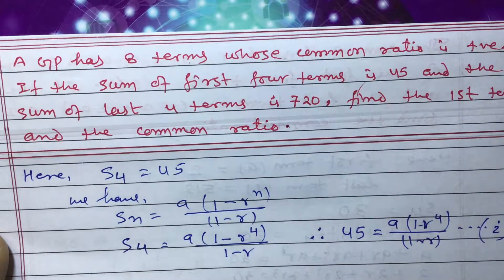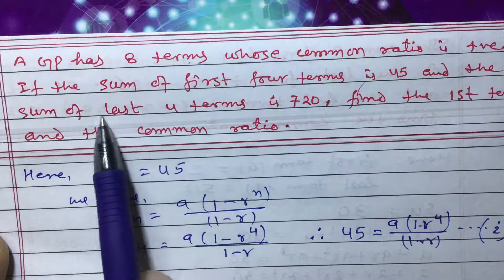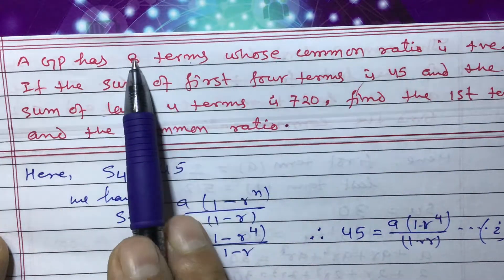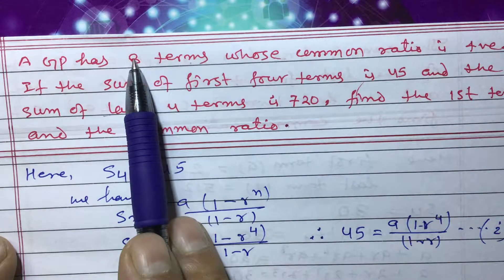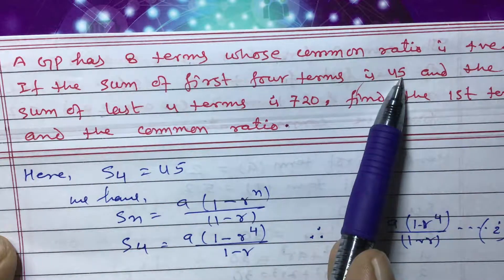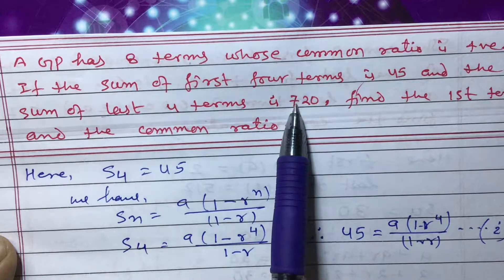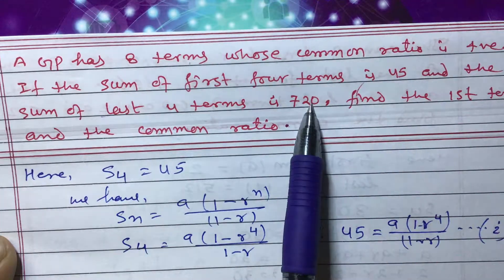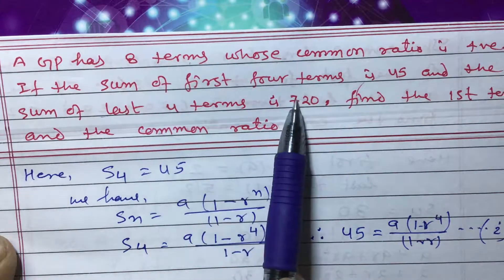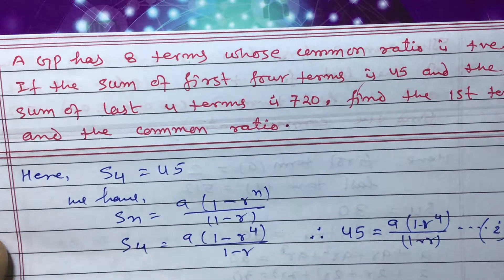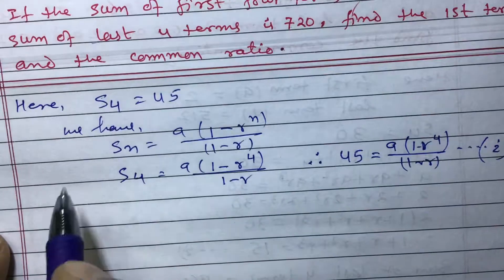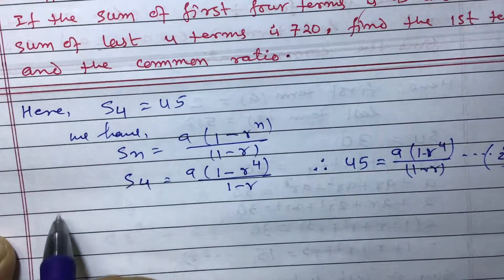Now we are given that the sum of the last four terms is 720. Out of eight terms, the first four terms sum to 45 and the last four terms sum to 720. Four terms plus four terms gives eight terms total.